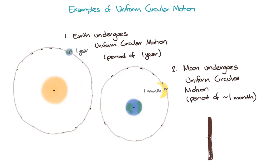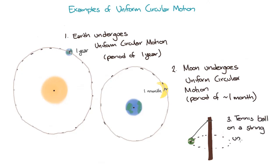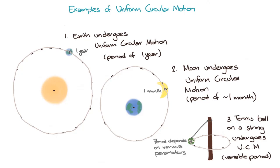A third example of an object undergoing uniform circular motion is a tennis ball attached to a string. When the tennis ball is made to swing around a wooden pole, it will undergo uniform circular motion. The ball and string example is similar to lots of other examples you may see of uniform circular motion, where an object is attached to a string and is being swung around.